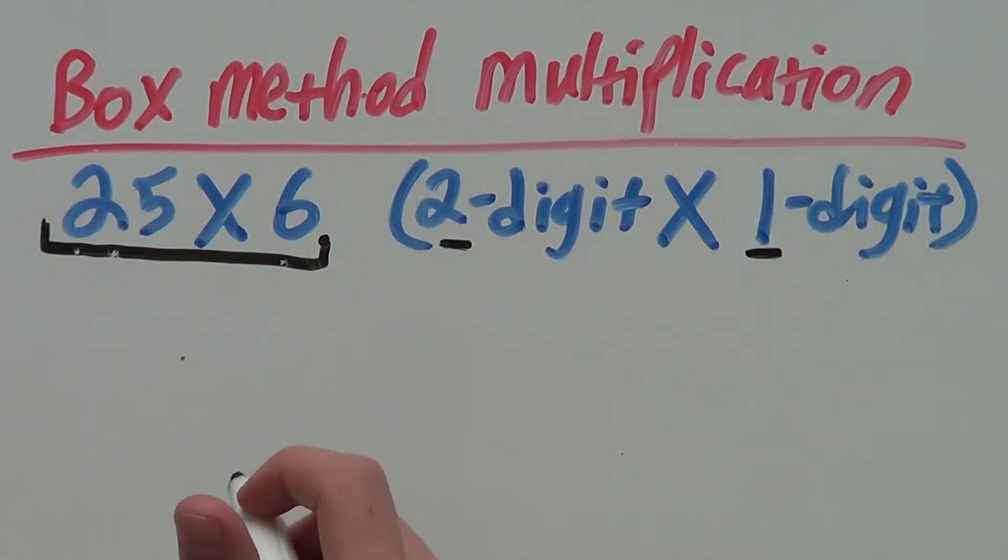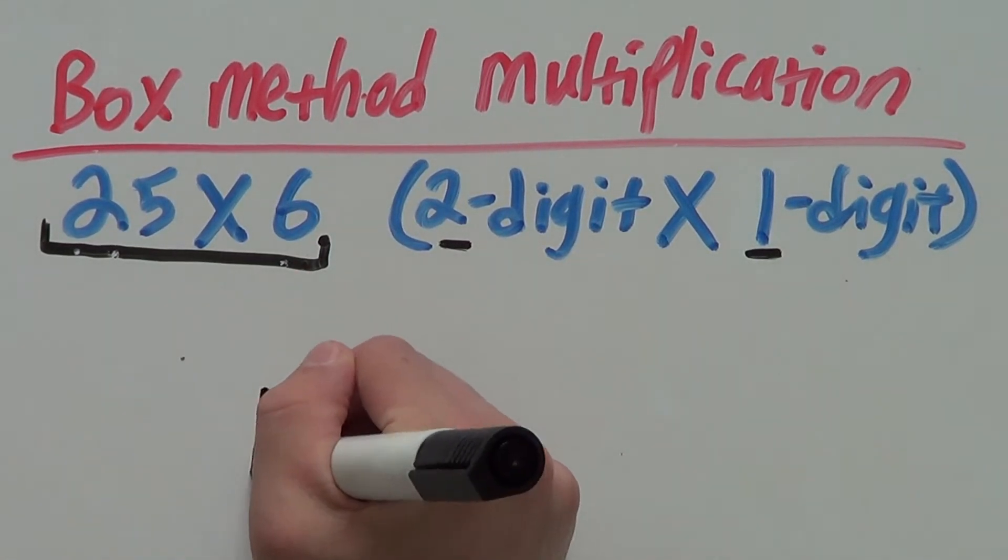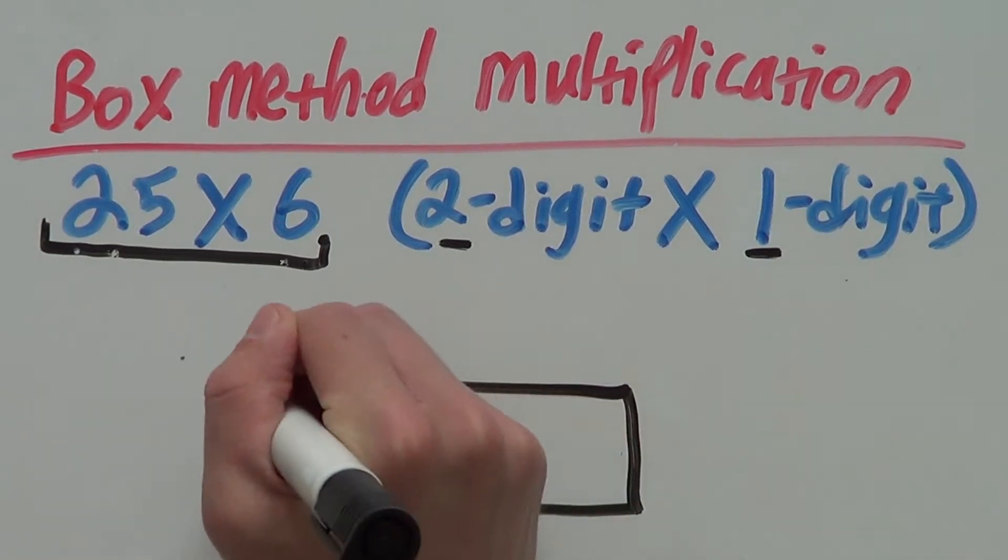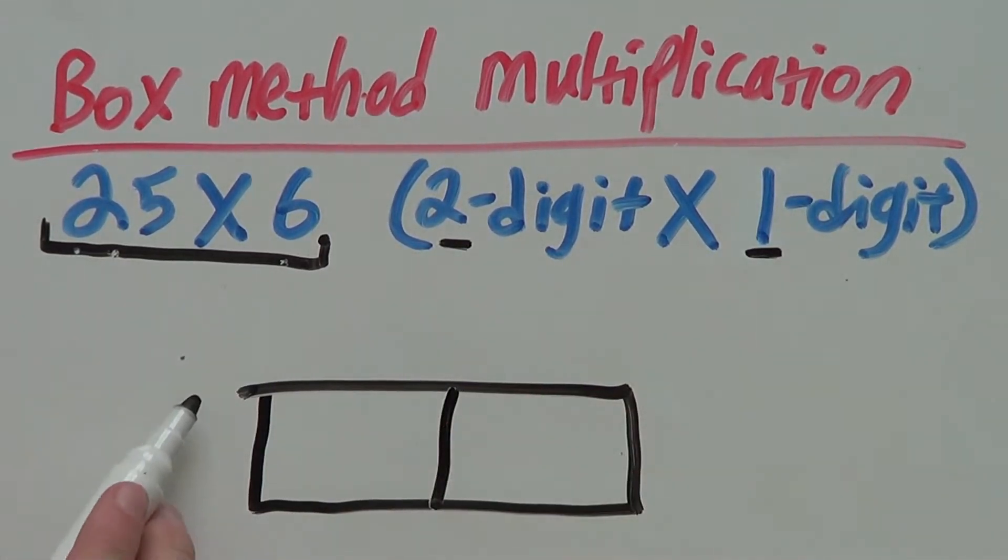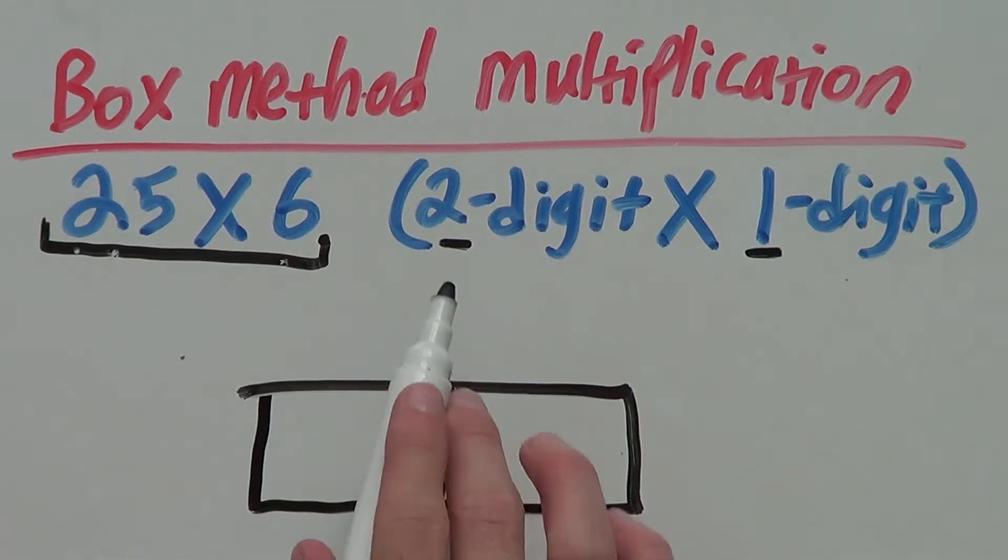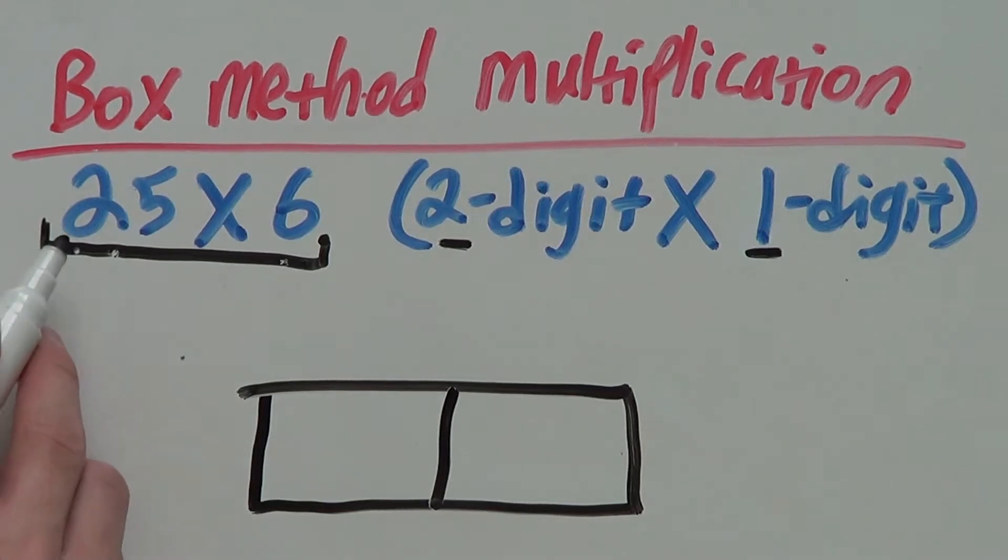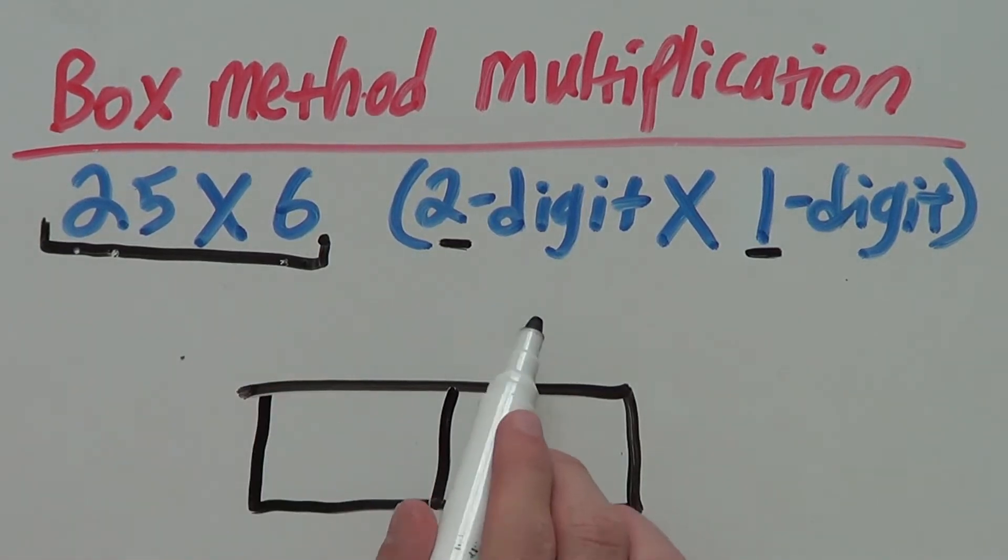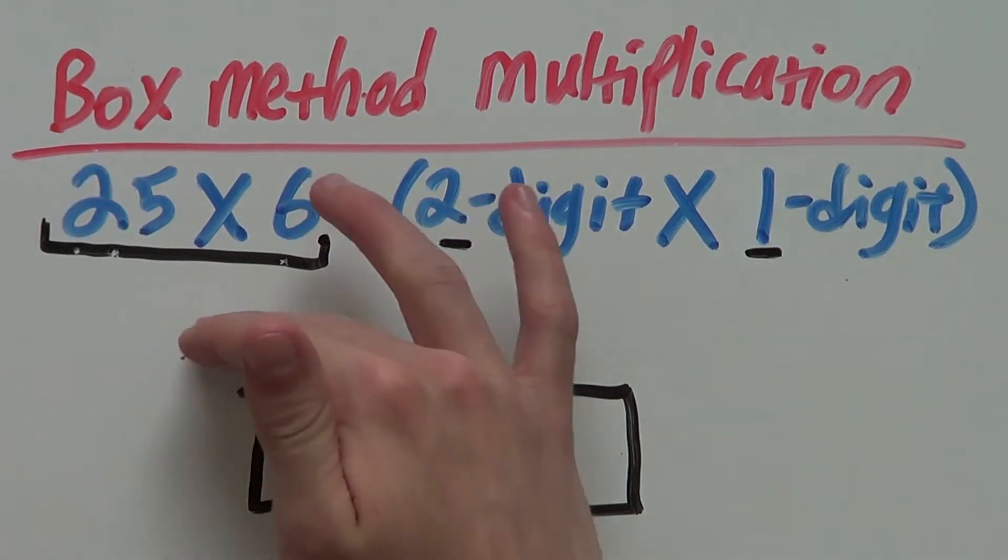We will have a 2 by 1 box that looks like this because we have 1 box high and 2 boxes long, which is a 2 by 1. Next up, we want to place our numbers here, here and here. You always place them on this side as well as the top.